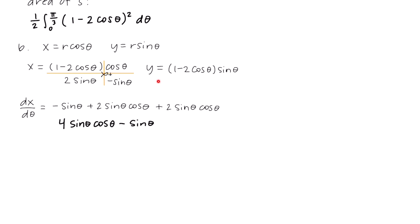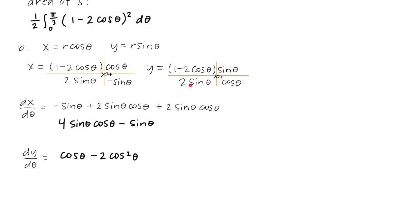To find dy/dθ, we apply the product rule again. The derivative of 1 minus 2 cosine theta is 2 sine theta, and the derivative of sine theta is cosine theta. We take the product of these and add the product of the other pair, distributing cosine theta to 1 and to negative 2 cosine theta. That gives our final expression for dy/dθ.